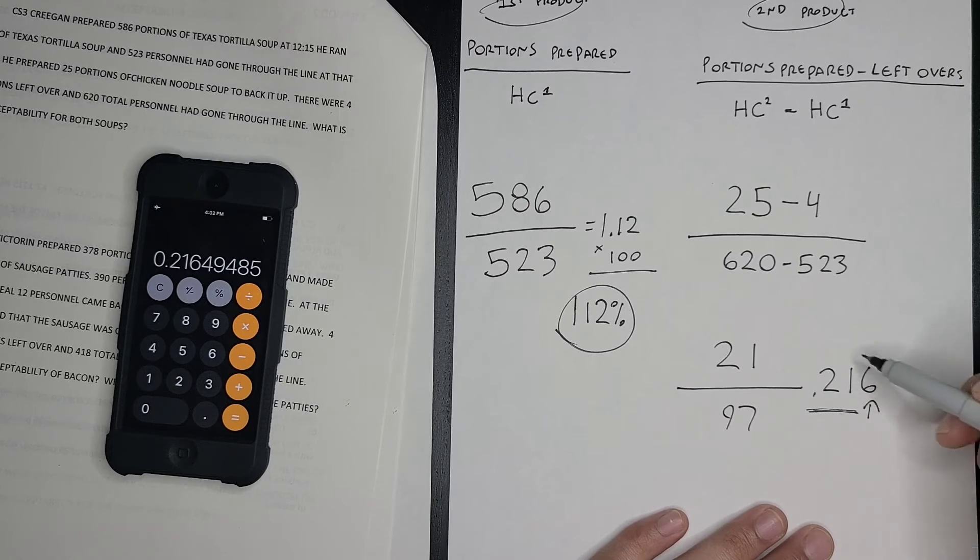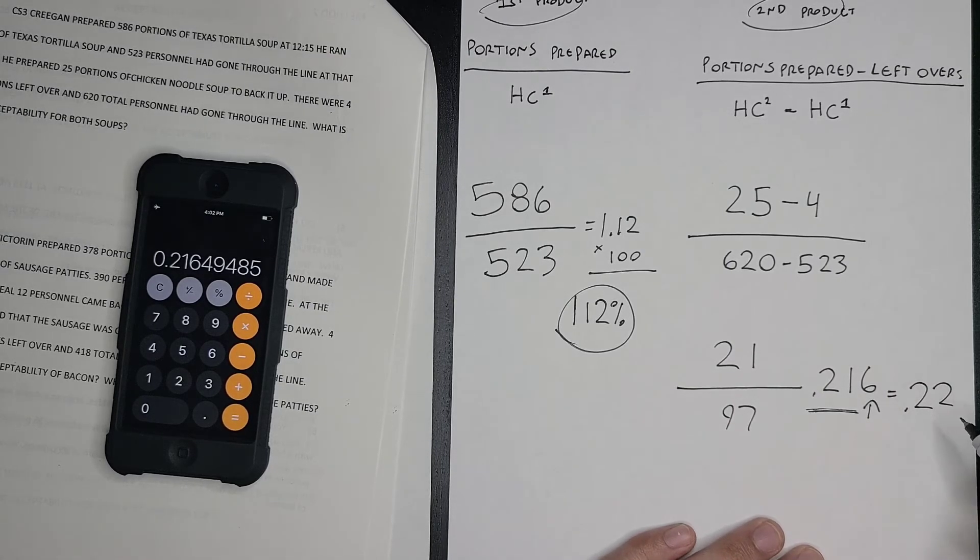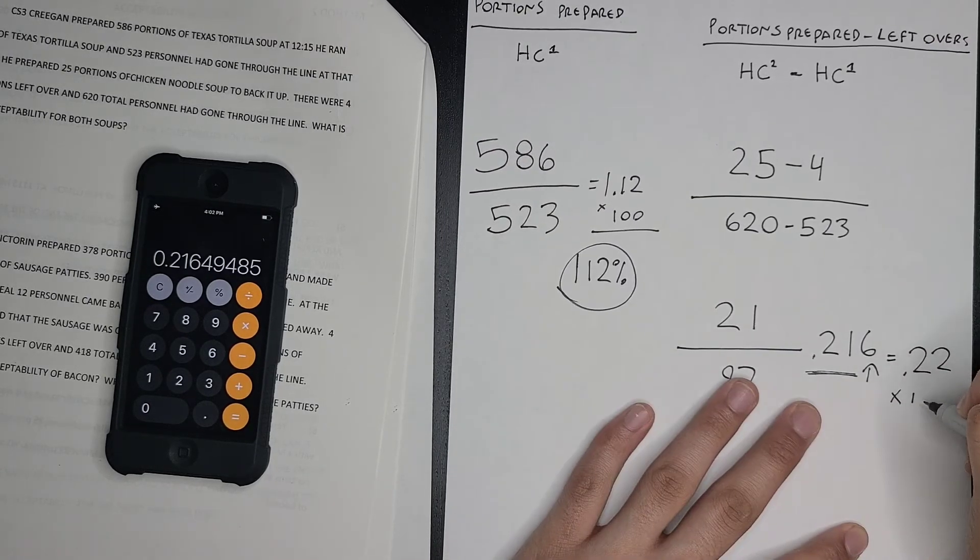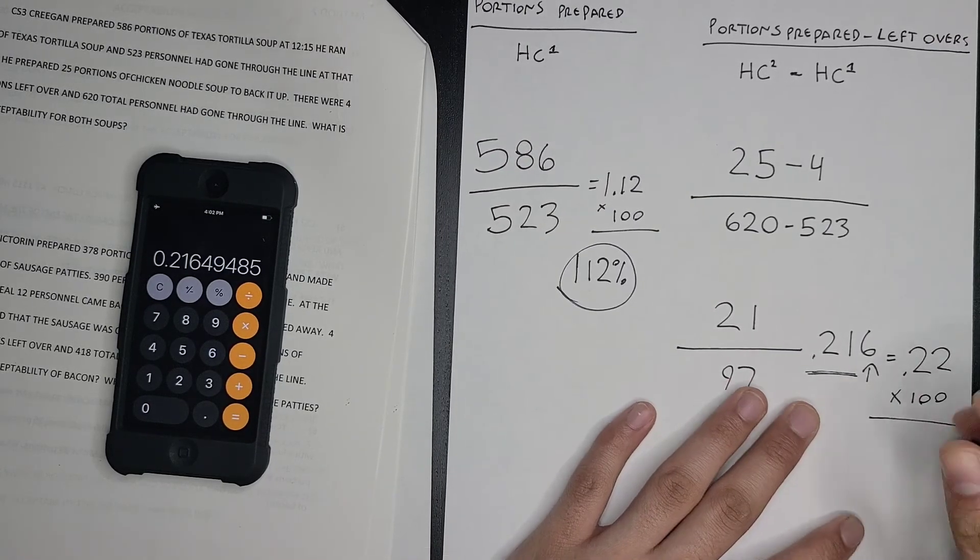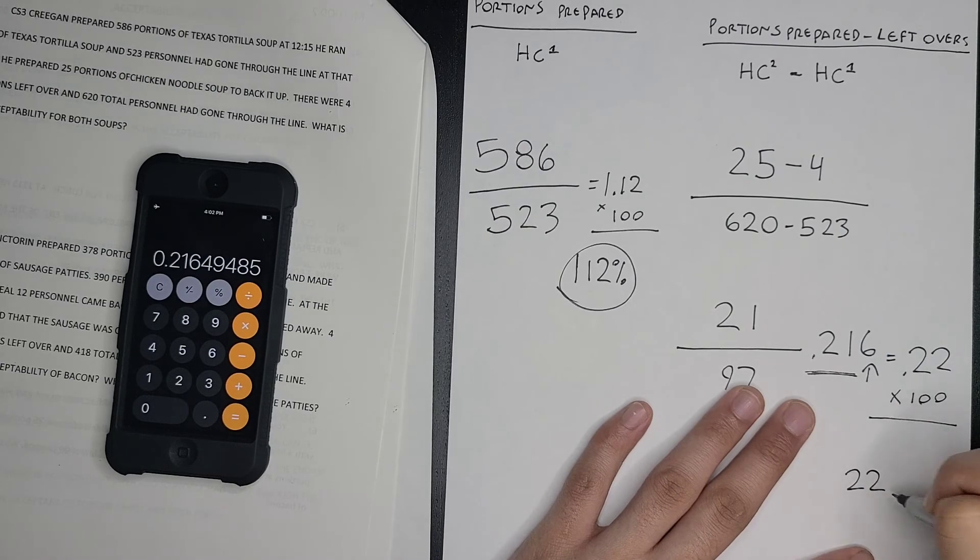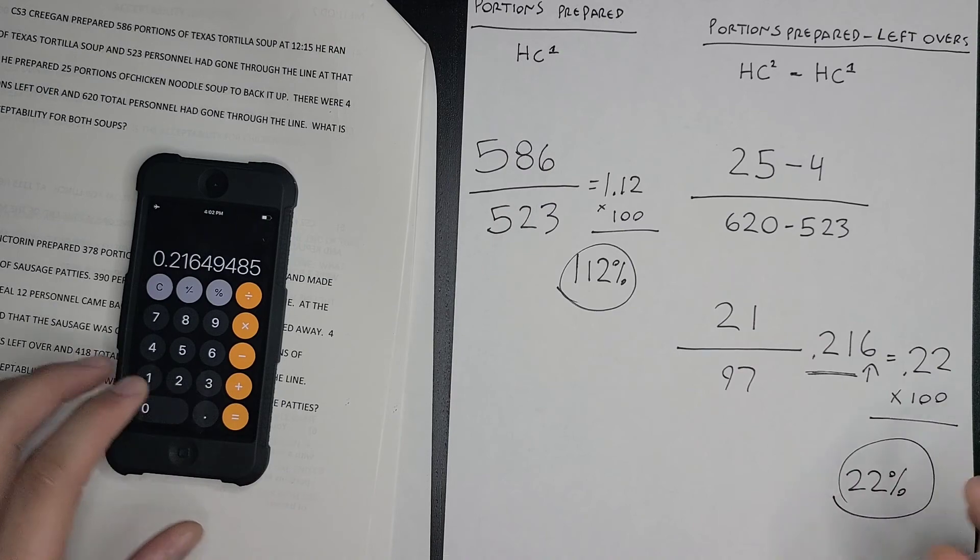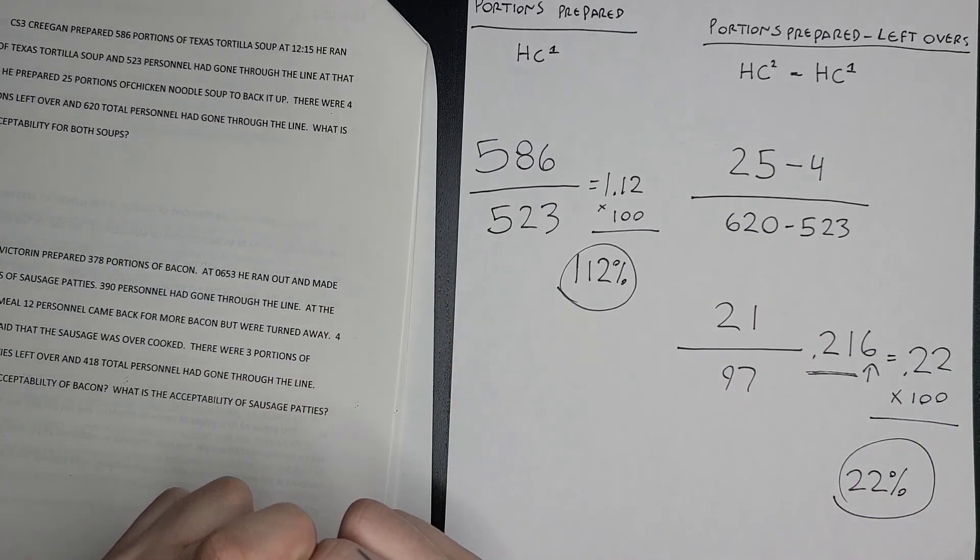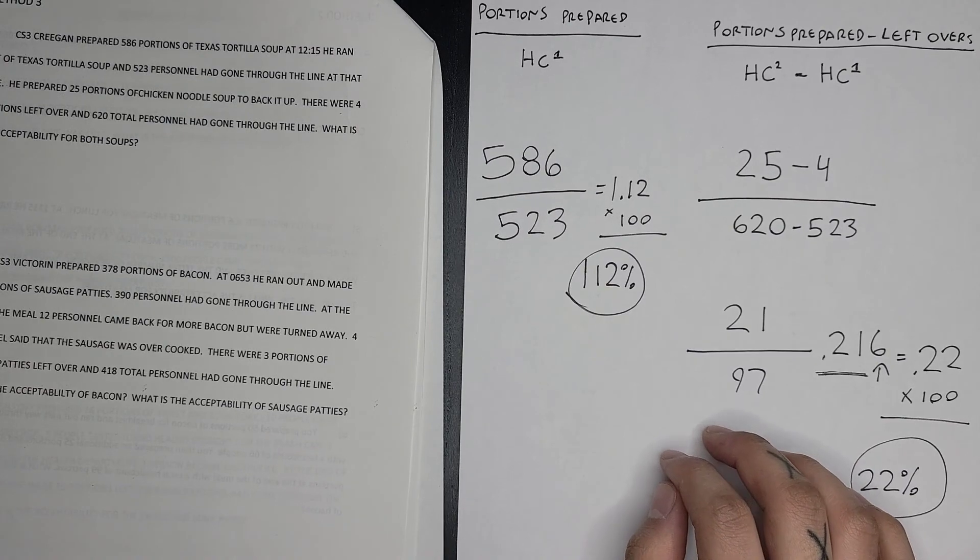So this is going to end up equaling 0.22. Again, acceptability is always a percentage, so we're going to multiply this by 100, which equals 22 percent. So you're going to have two different answers for this problem.